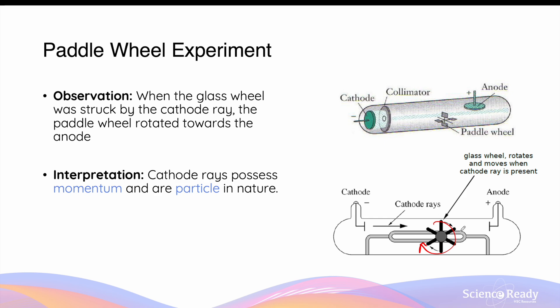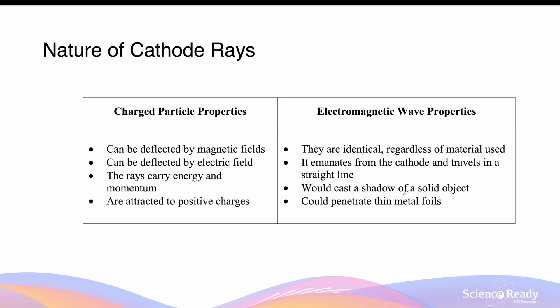The rotational and translational motion of the paddle wheel suggests that cathode rays do not just possess energy, but also momentum as it caused the paddle wheel to move. Momentum also implies that cathode rays have mass, and therefore are particles in nature.